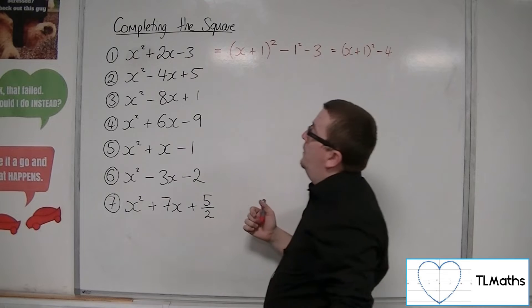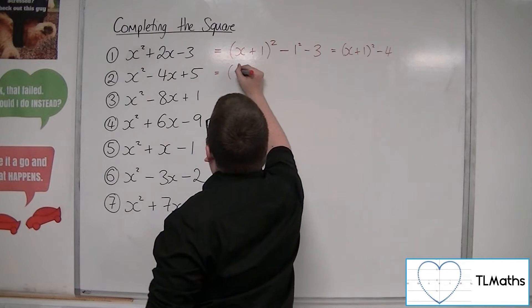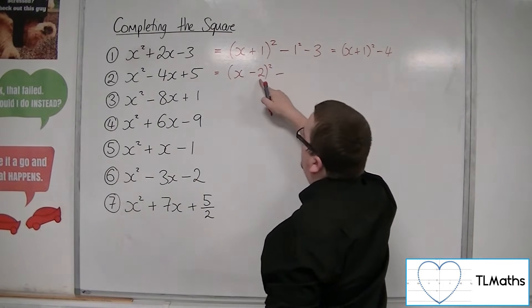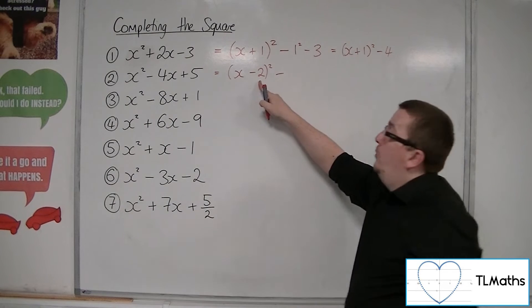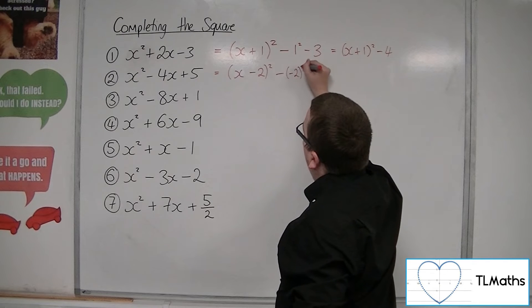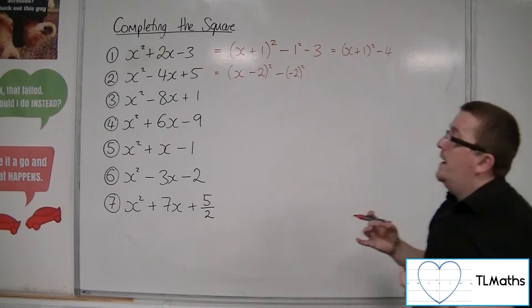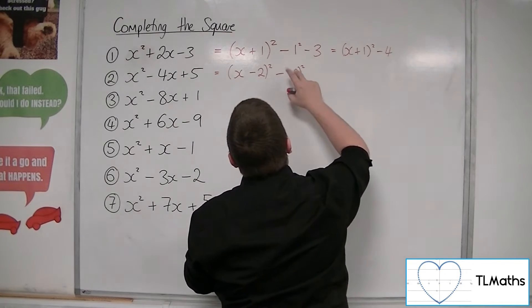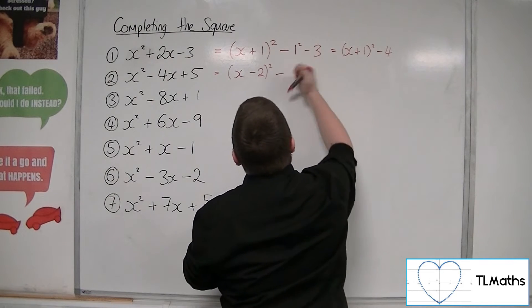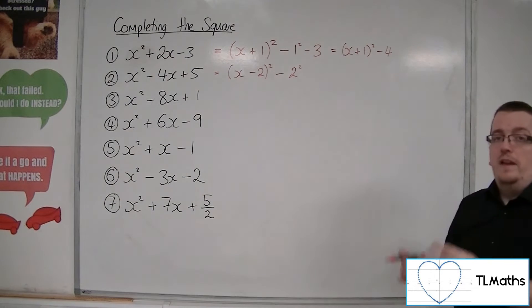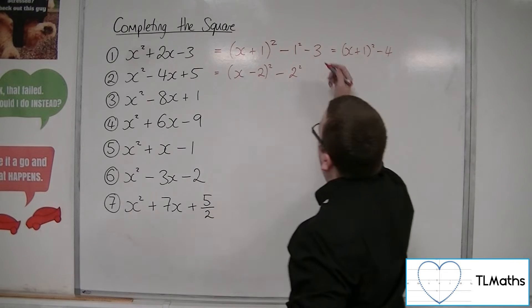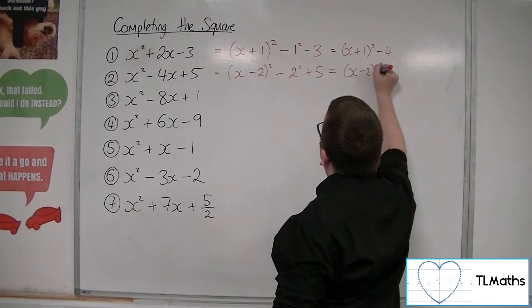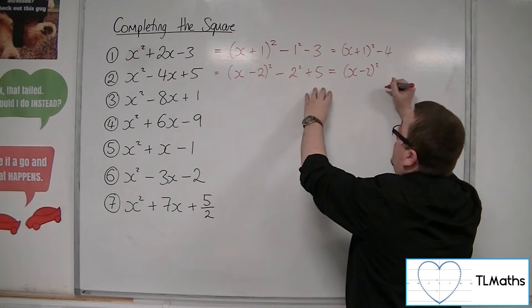Number 2: x squared minus 4x plus 5. We're going to do x and then half of minus 4, so minus 2, squared. We take away this number squared, so minus 2 squared. Because we're always taking away and a negative squared is a positive, we can just write it as take away 2 squared. We've still got the plus 5, giving us x minus 2 squared, take away 4, plus 5, so plus 1.